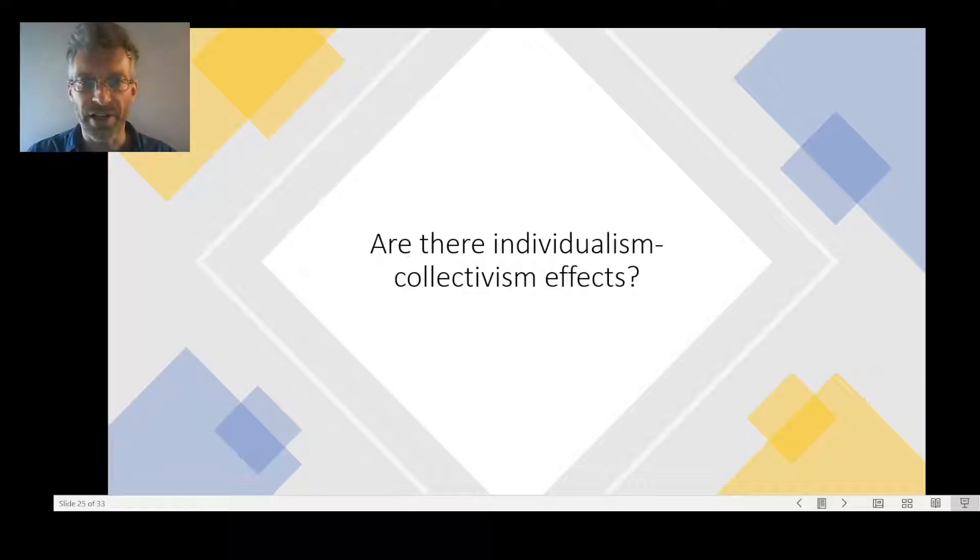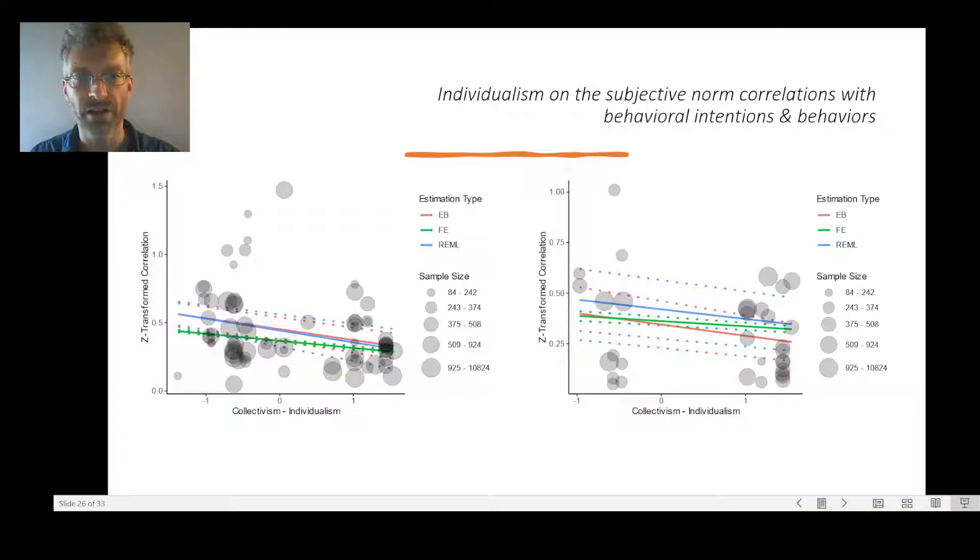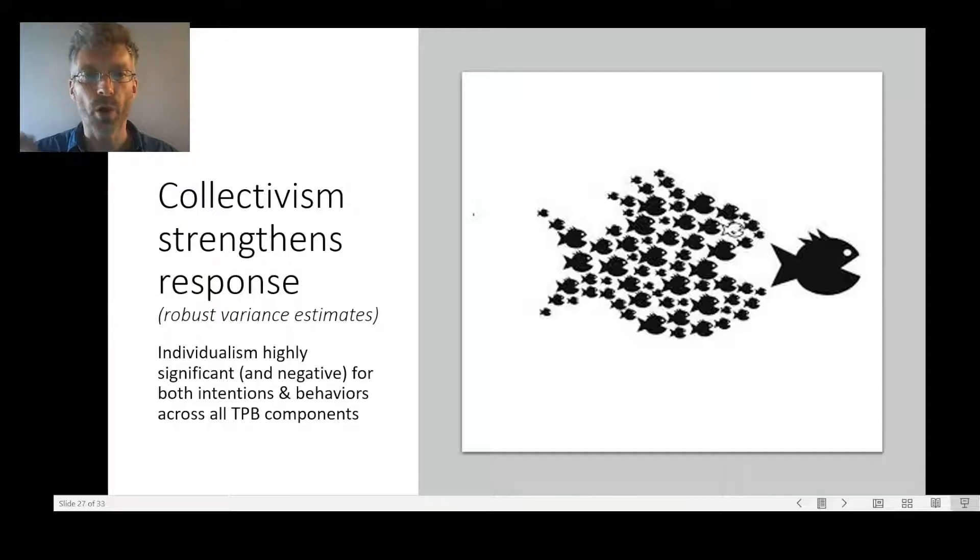Are there individualism and collectivism effects? Yes, they are. Interestingly, the effects are in line with previous research for subjective norms. But on the other hand, we also see strong collectivism effects across the board. Contrary to previous research that suggested individualism strengthens attitude effects, what we actually find is that collectivism strengthens both attitude effects and perceived behavioral control effects, which suggests it's actually a collective action problem. People have to work together in order to protect themselves and protect others.